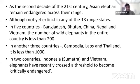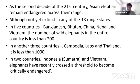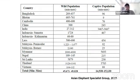As of the second decade of the 21st century, Asian elephants remain endangered across their range. Although not yet extinct in any of the 13 range states, in five countries — Bangladesh, Bhutan, China, Nepal, and Vietnam — the number of wild elephants is less than 200 individuals. In Cambodia, Laos, and Thailand it is less than 1,000. In Indonesian Sumatra and Vietnam, elephants have recently crossed the threshold to become critically endangered. Across all 13 range countries there are approximately 45,000 to 49,000 individuals in the wild and about 15,000 in captivity.